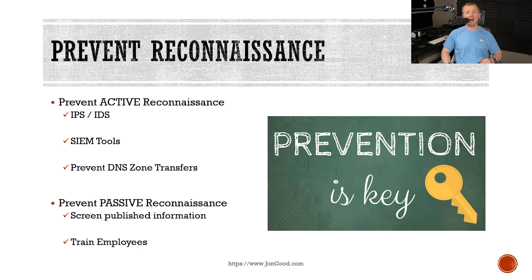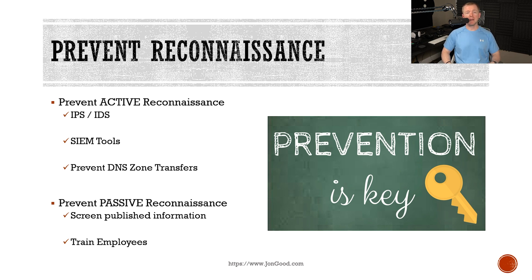Limiting the amount of reconnaissance information available for attackers is crucial in minimizing attacks. The more information an attacker can gather about your organization, the higher chance they have of being successful. To prevent this type of reconnaissance, you want to use intrusion prevention systems or intrusion detection systems. Use monitoring tools such as SIEM tools, and pay attention to the information available externally from your network, such as preventing DNS zone transfers.